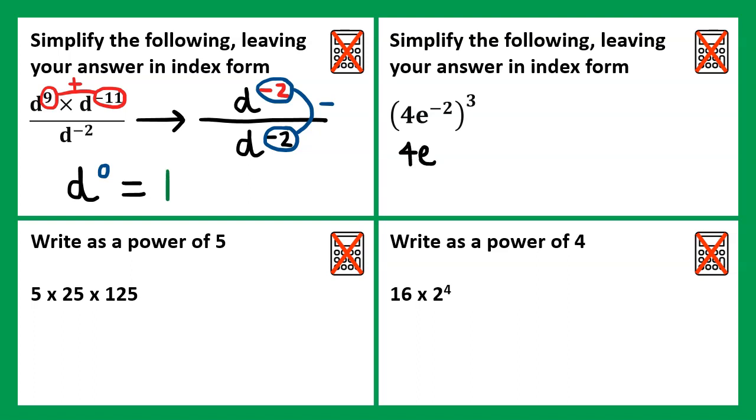This would be the same as 4e to the negative 2 times 4e to the negative 2 times 4e to the negative 2. 4 times 4 times 4, or 4 cubed, is 64. Our base is e, and we have negative 2 plus negative 2 plus negative 2 again. This would be the same as negative 2 take away 2, which is negative 4, and then taking away 2 again, which would leave us with negative 6.